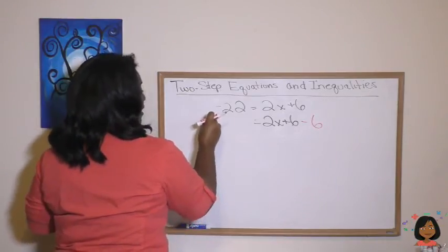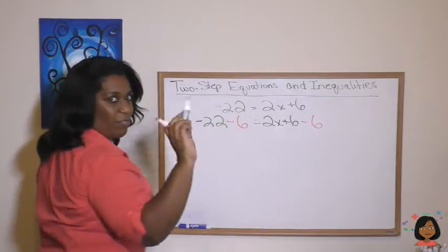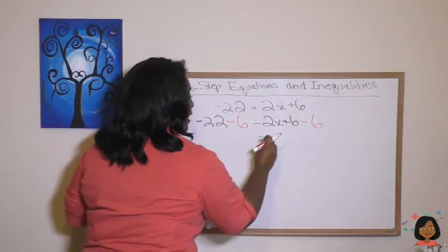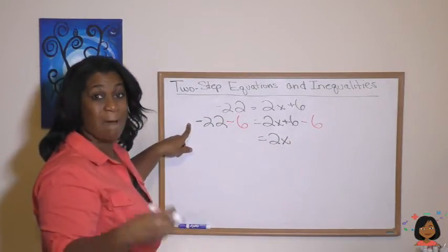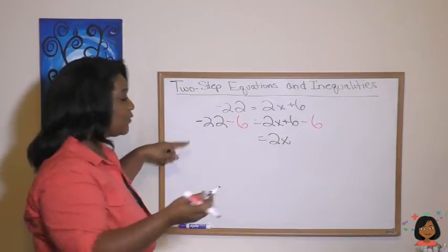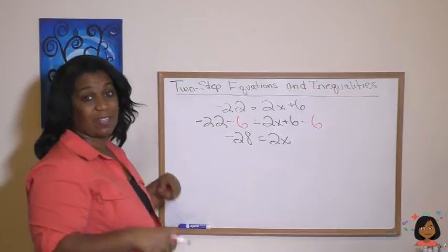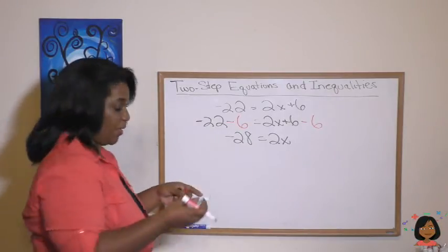2x plus 6 minus 6. Now let's subtract 6 from the other side. Let's do negative 22 minus 6. I got a whole thing going on with the markers here. Let's simplify. We are down to 2x on this side. Negative 22 minus 6 is a negative 28. Now we've got to get rid of a 2. We can divide by 2. We can multiply by a half. It's really the same thing.